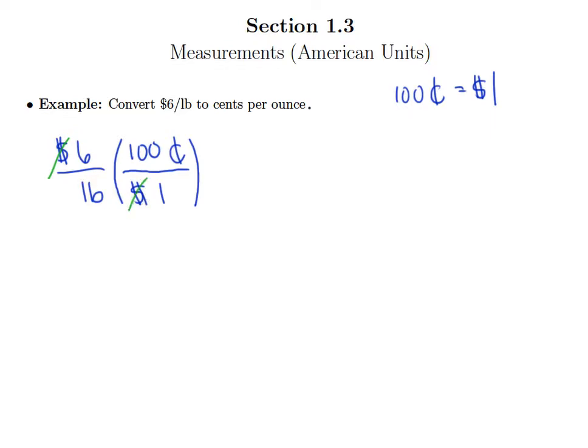Now we can focus on taking pounds to ounces. What do we know about pounds and ounces? There are 16 ounces in one pound. Because pounds are on the bottom of the original rate and we want to get rid of them, pounds go on top of our conversion factor and ounces go on bottom.